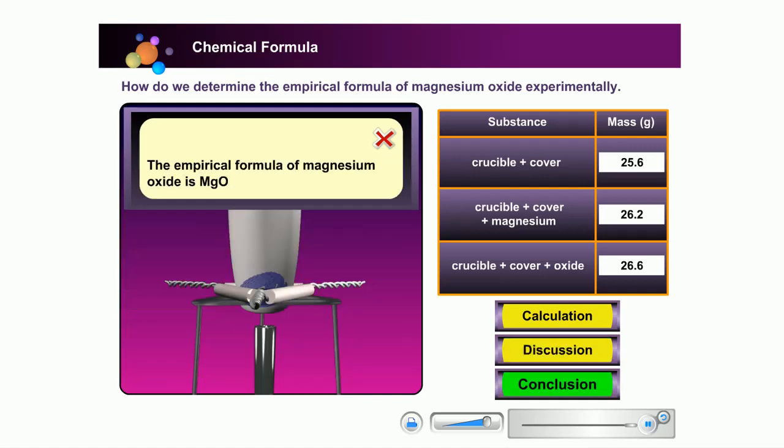The empirical formula of magnesium oxide is MgO.